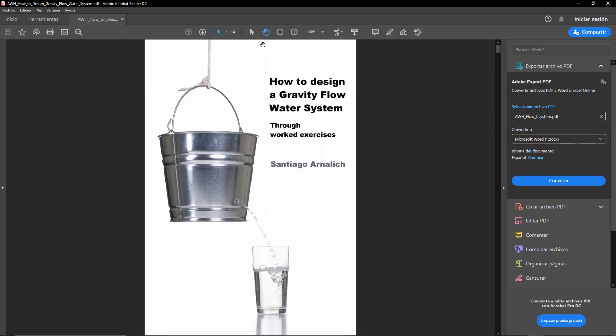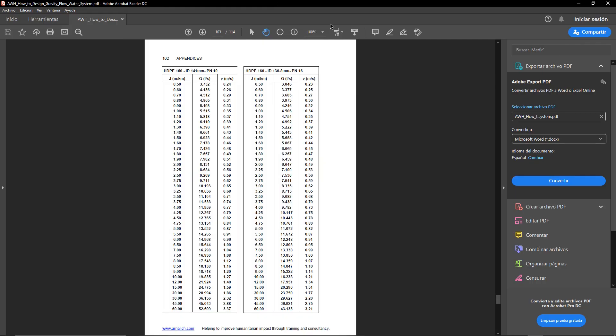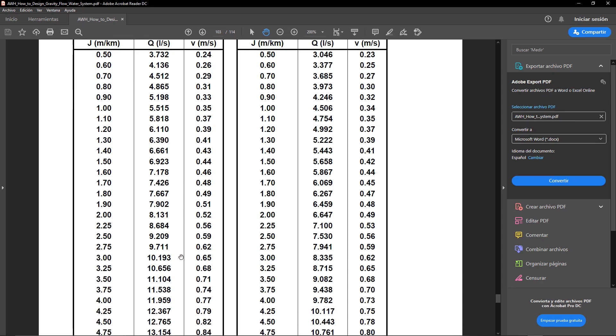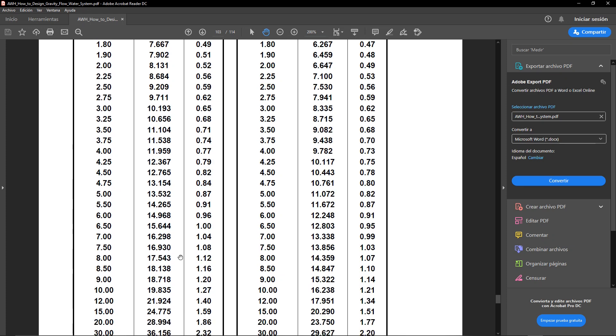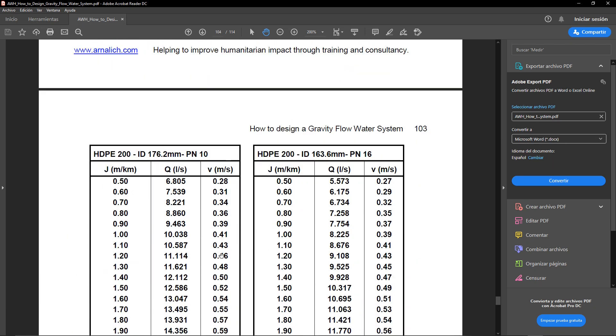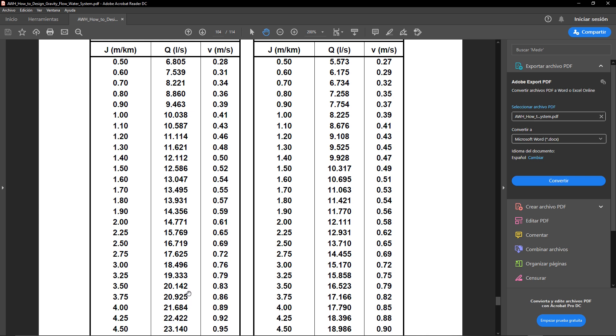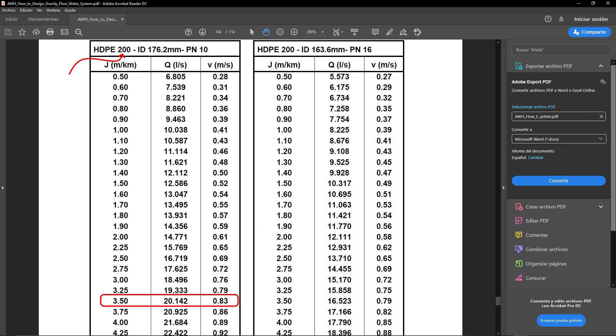Step 2 is to browse the head loss charts for our material of choice, HDPE and PN10, since the maximum pressure in the system is well below 10 bar. For 20 liters per second, a 160 millimeter pipe produces 10 meters per kilometer, too high. The next size up is 200 millimeters. 3.5 meters per kilometer is below our maximum 4 and we'll use this diameter.